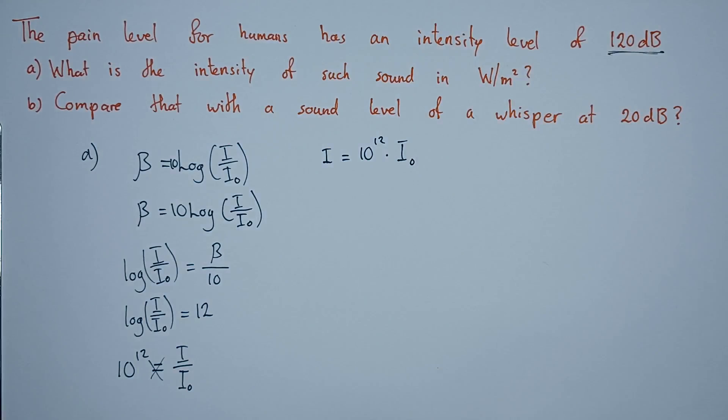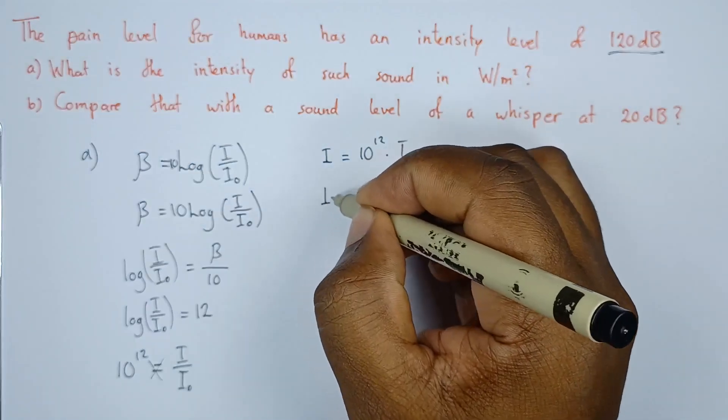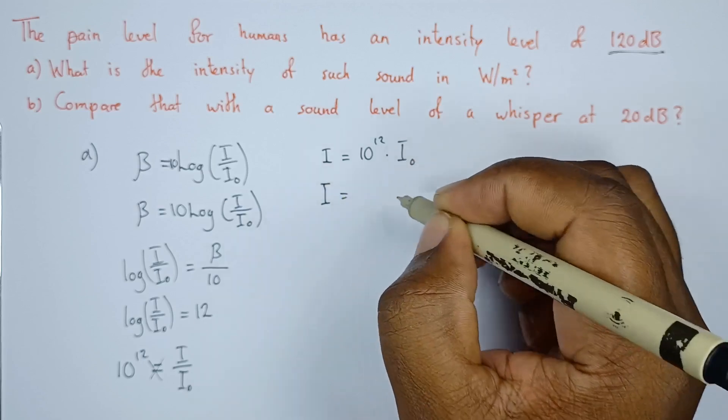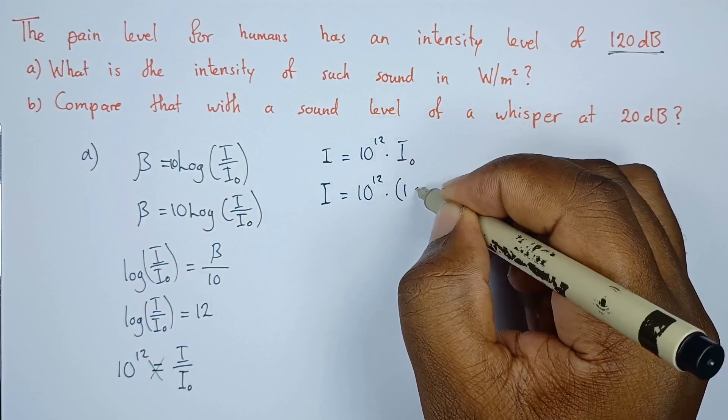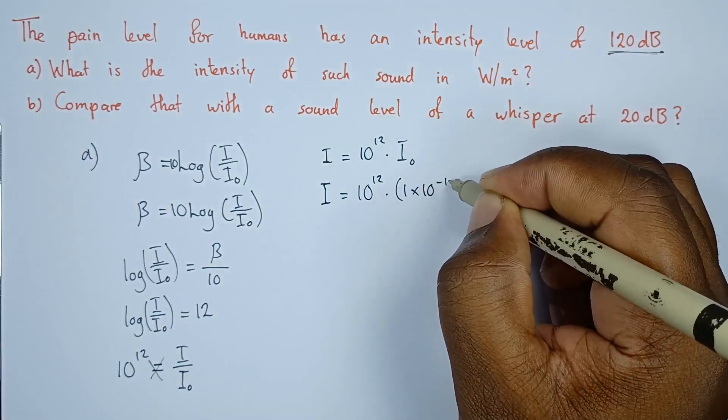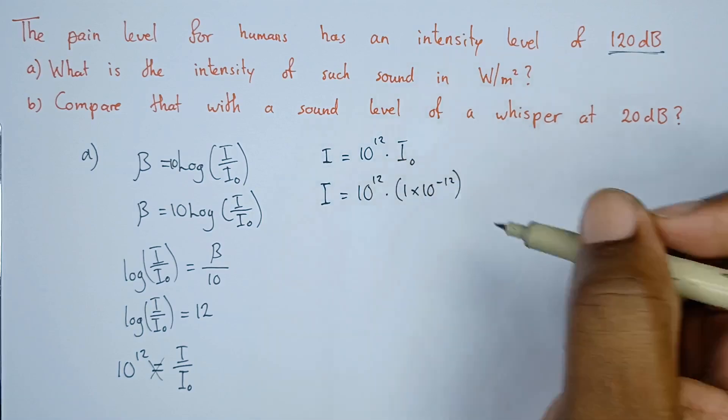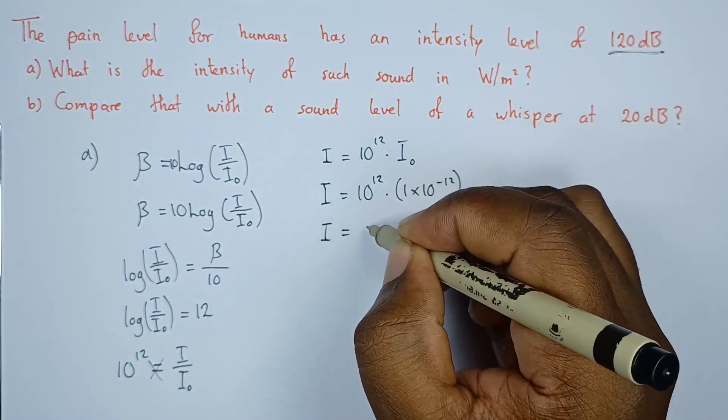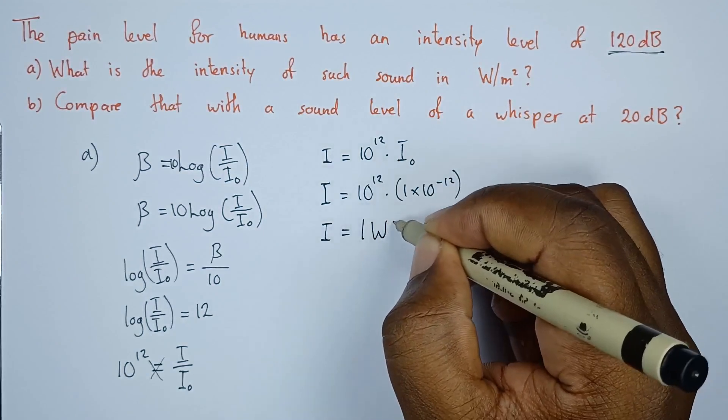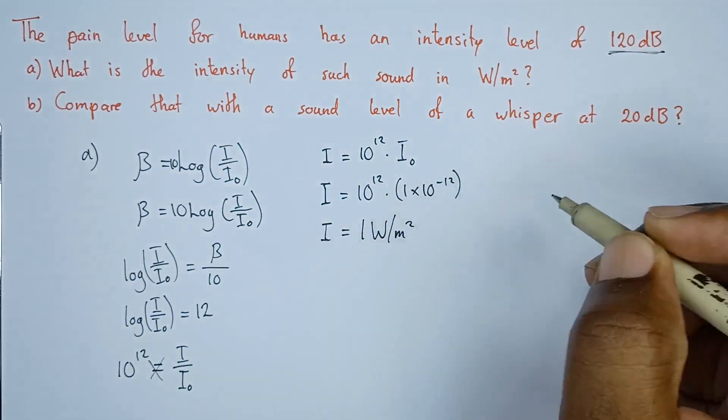The threshold of intensity is a standard value. I equals 10 to the power 12. The value for the threshold of intensity is 10 to the power negative 12. If we multiply these two values, the intensity in this case is just equals to 1 watt per square meter.